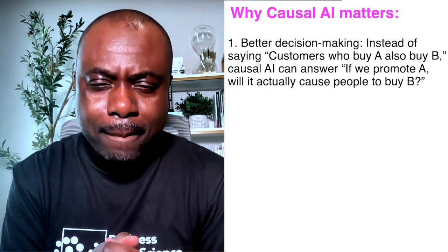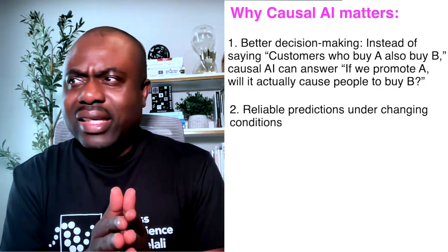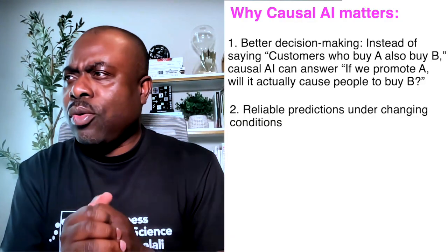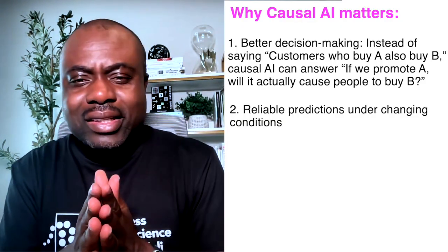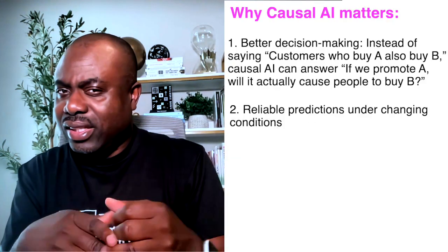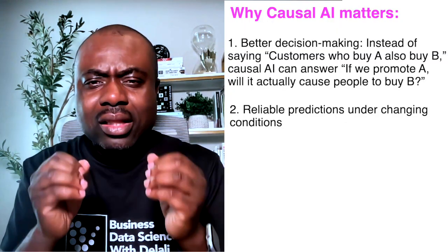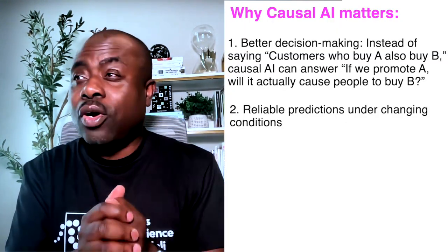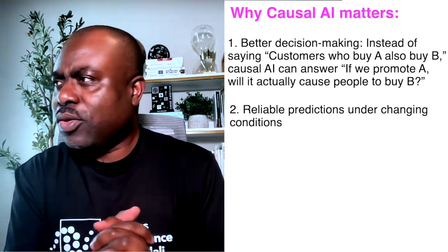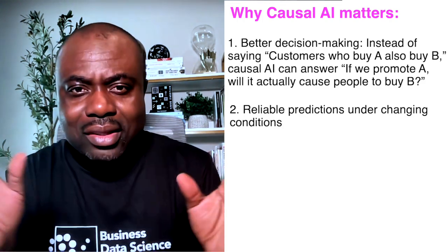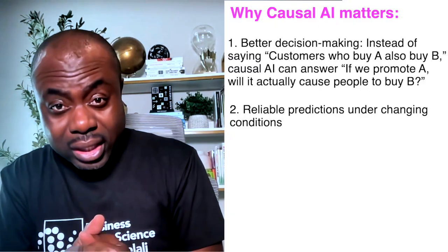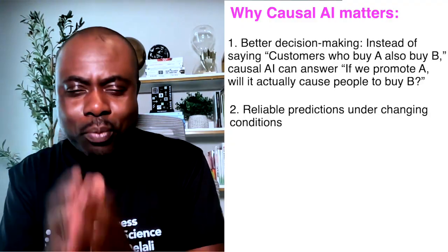Number two: causal AI is more reliable under changing conditions. When the world changes, correlation-based AI models fail because they only use historical patterns to predict the future. Causal models, however, are more robust — they don't break down just because conditions have shifted. That's the second major reason causal AI is important.